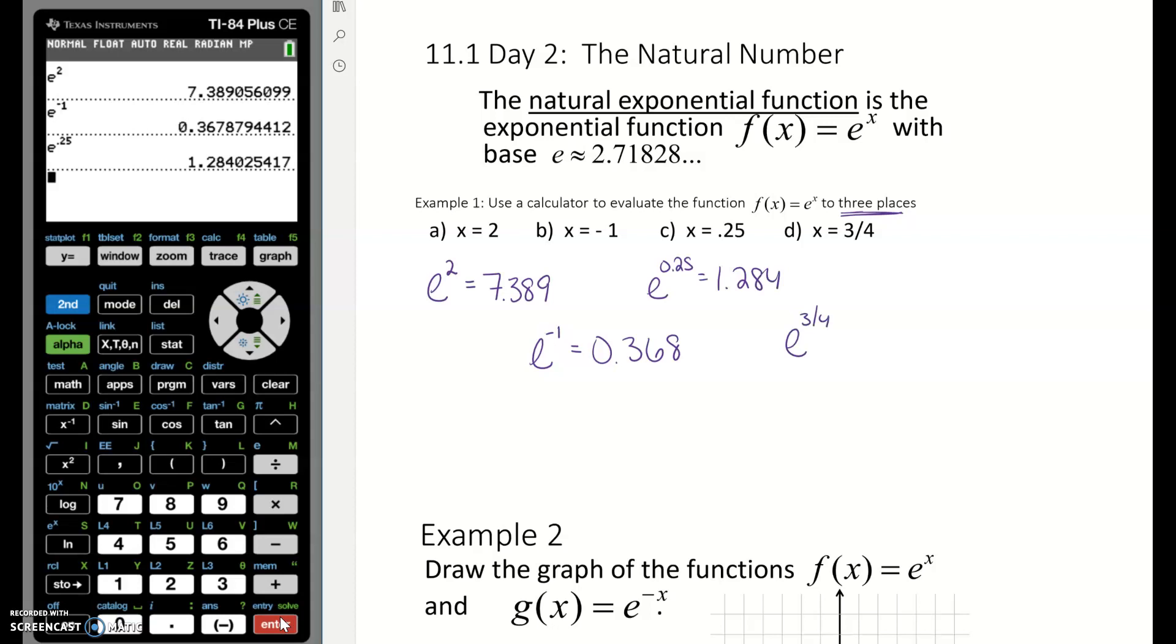Part c, e to the 0.25 is 1.284. Part d, e to the 3/4ths. If you're using a scientific calculator, when you get e it probably looks like this in your calculator. You would want to type in 3 divided by 4, close your parentheses, and then hit equal. On graphing calculators it already pops you up into the exponent, so you can do 3 divided by 4. But you can also type in parentheses 3 divided by 4 just to make yourself feel better that you've contained that fraction. And it is 2.117.